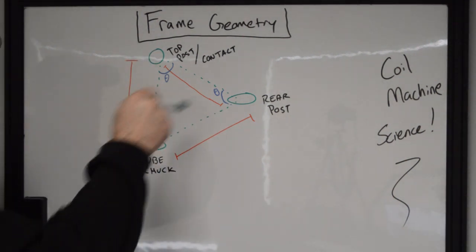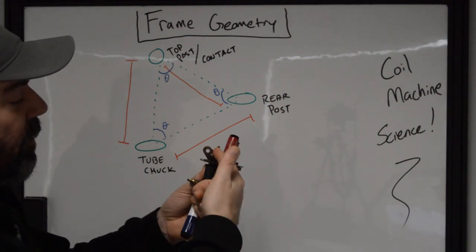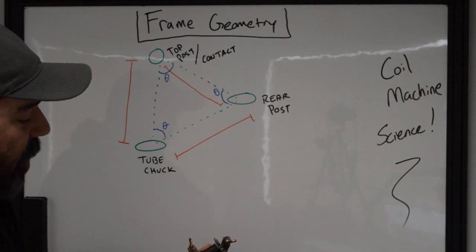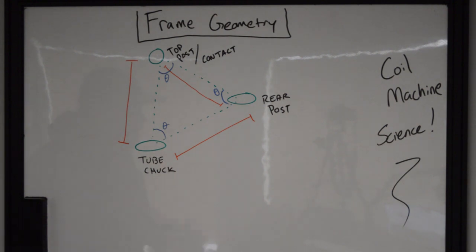So these three points inside the machine - we're talking about the top post, which is where the contact is, the rear post that hangs the springs and the A-bar and such like that, and then the chuck where you keep the tube. That geometry is going to affect your speed.